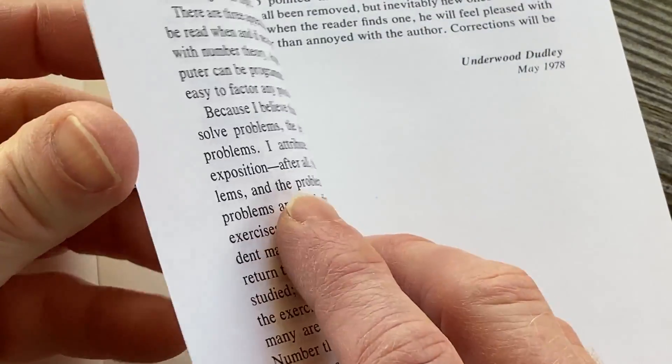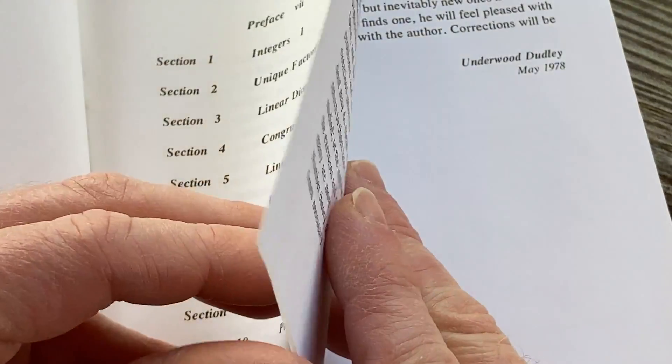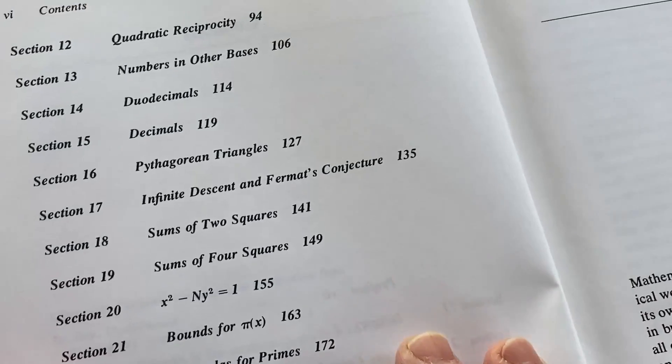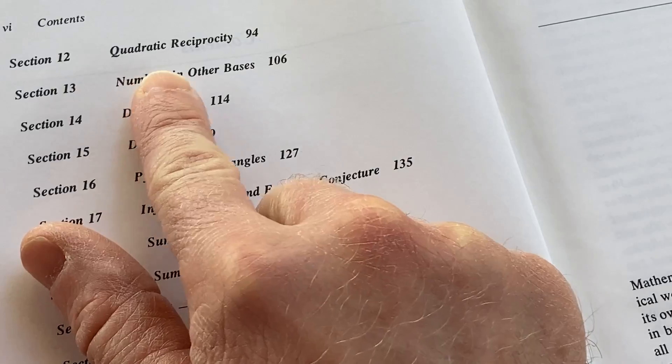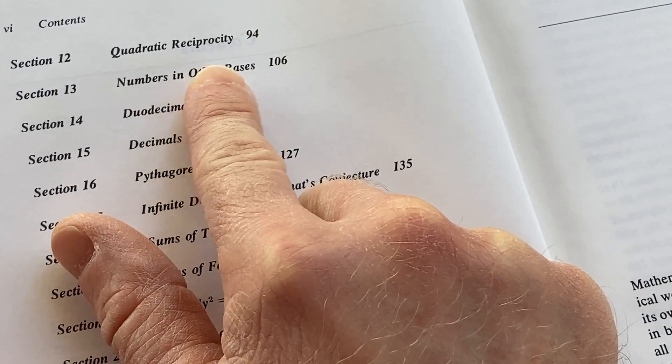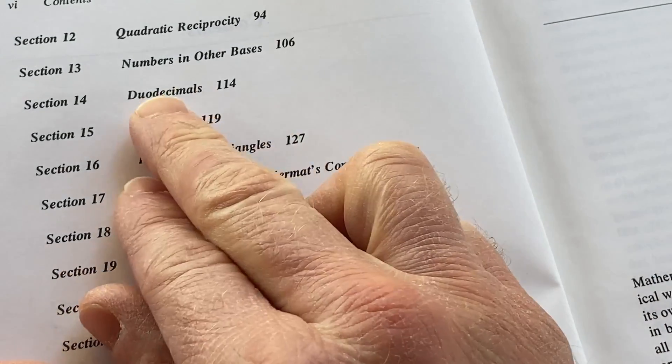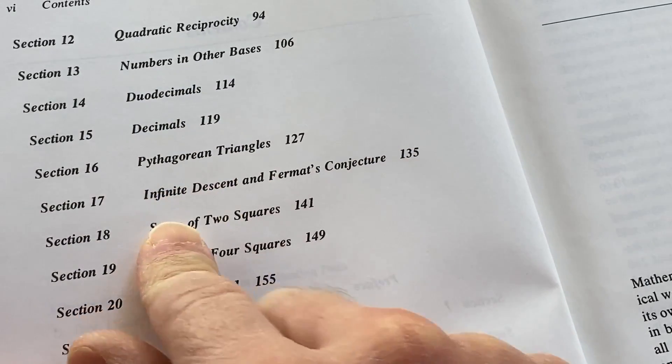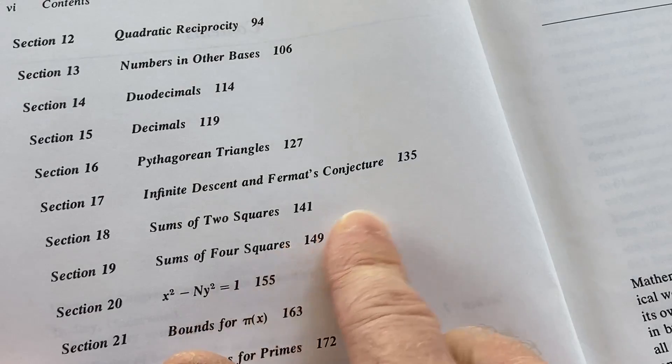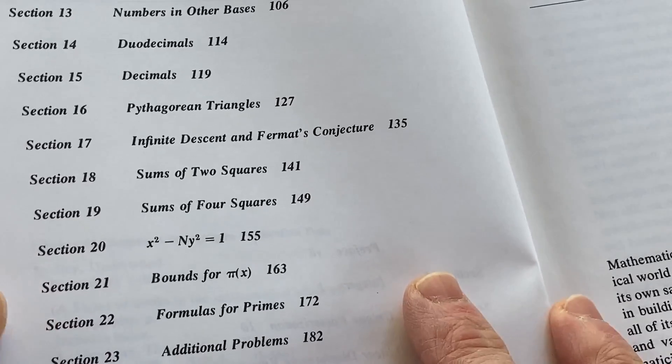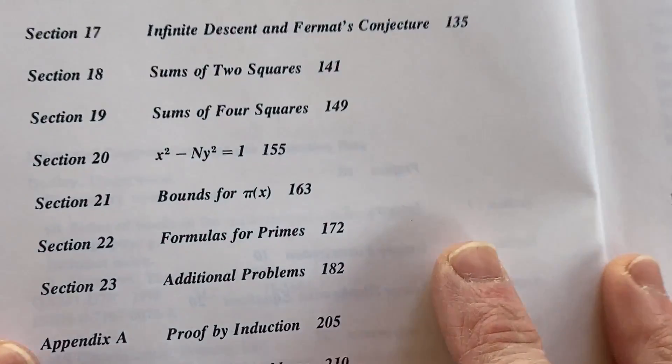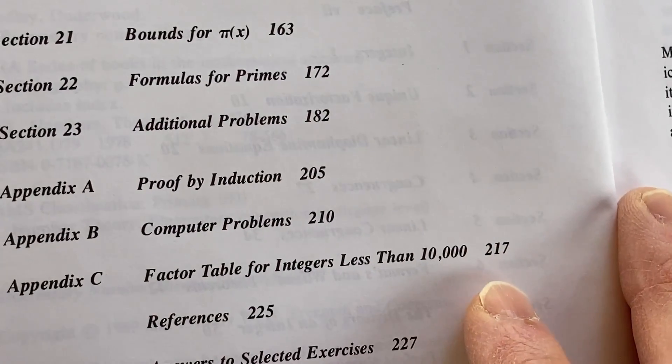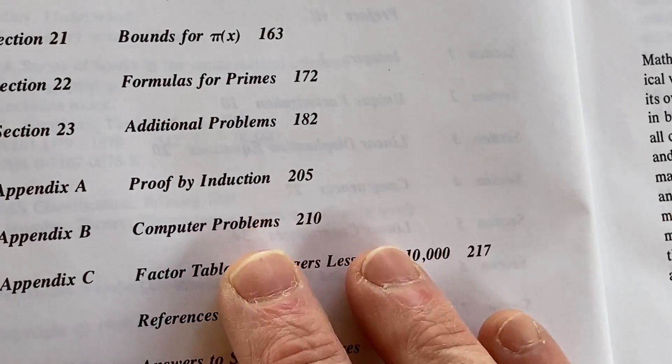I wish it was Euler but no. You can make comments on my pronunciation. Numbers in other bases, duodecimals, decimals, Pythagorean triangles, infinite descent, Fermat's conjecture, sum of two squares, sum of four squares, bounds for pi of x, formulas for primes, additional problems, proof by induction in the appendix, some computer problems, and then some other things here.